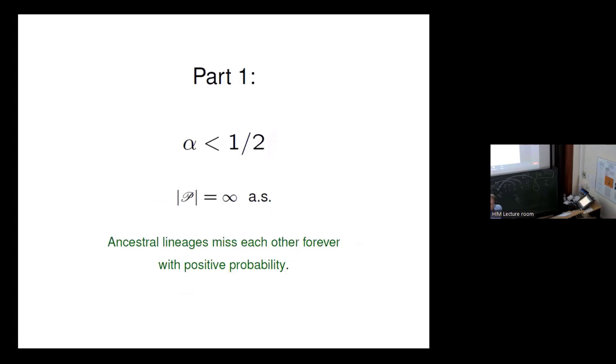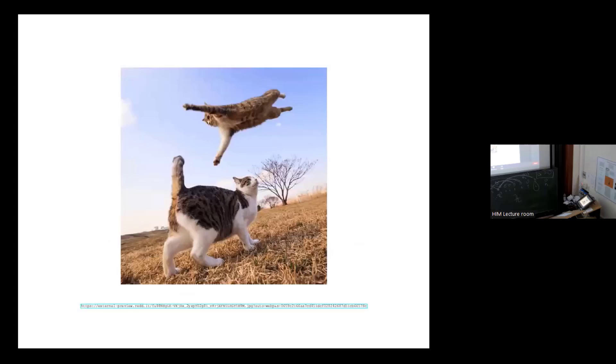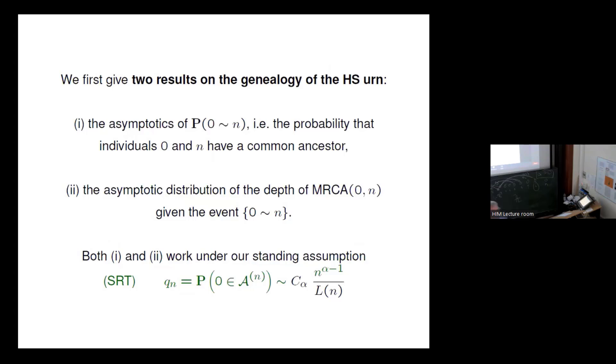Now, part one. Here, ancestral lineages may miss each other forever with positive probability, right? And that's the logo. Cats over cats. Okay. Now we first give two results on the genealogy of the Hammond-Sheffield urn. And that's my credo. Genealogies first, and types afterwards, if there is a neutral situation. Of course, if there is a selective situation, I mean, you need the types. But if things are neutral, then it's nice to have a graphical representation and to build everything on the genealogy.